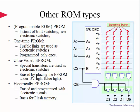The next one is the ultraviolet EPROM. This uses special transistors in place of electronic switches, and they can be erased by placing the EPROM under ultraviolet light, which is usually known as blue light. That can be erased, but it is a bit of a costly technique. The final and most popular one now is the electrically erasable EPROM. It is erased and programmed with electronic signals, and it lies at the foundation for flash memory.